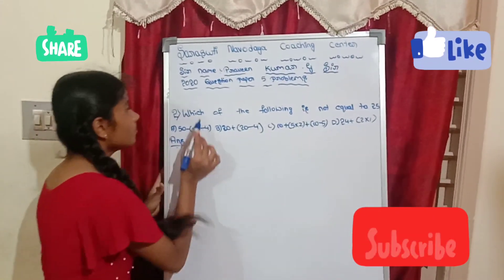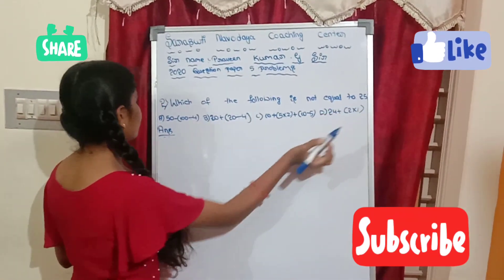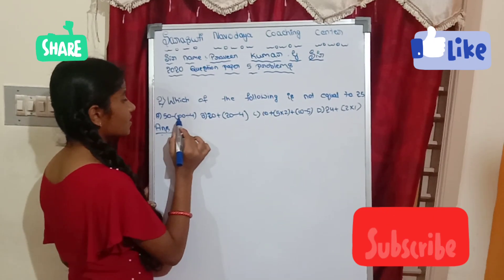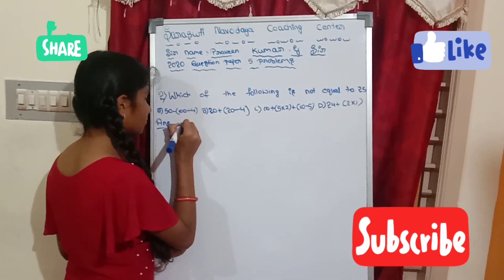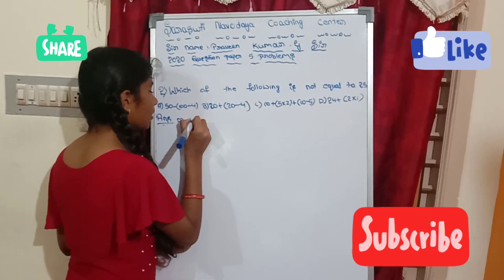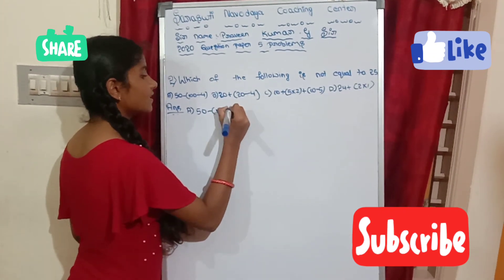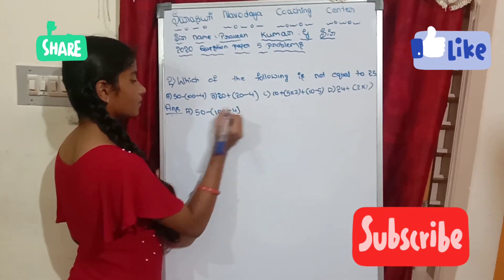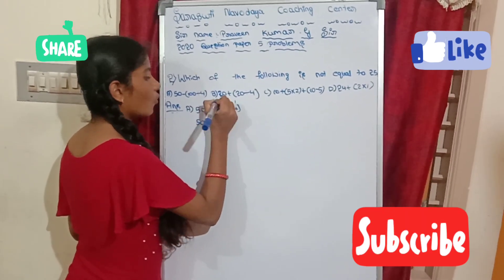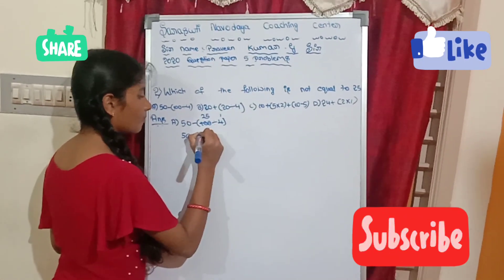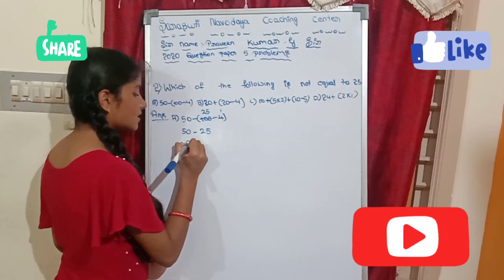Second problem: Which of the following is not equal to 25? Option A: 50 minus (100 divided by 4). The option equals 50 minus 25, which is equal to 25. So option A equals 25.